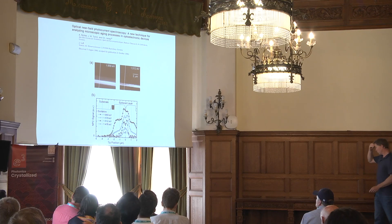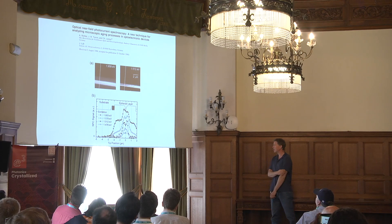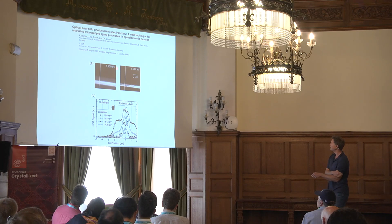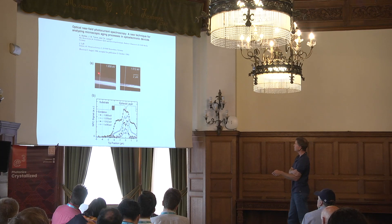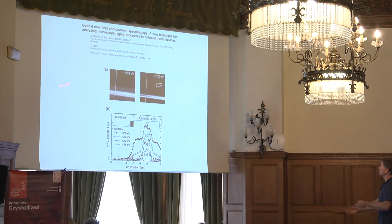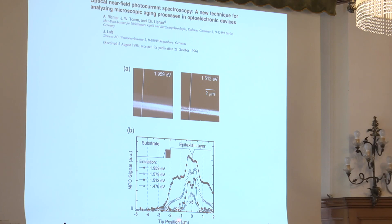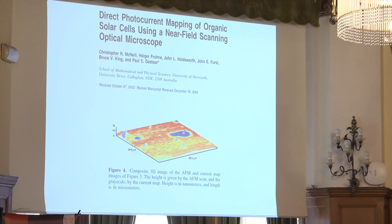Photocurrent nanoscopy is not new. It was already done back in 1996, mostly with visible light. It was initially used to look at solar cells — to understand how currents and voltages are generated. Here is work from 1996 where they look at spectra, using different excitation energies to understand at which location photocurrent was generated.